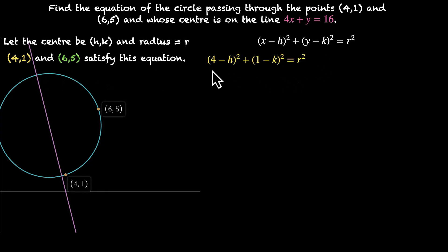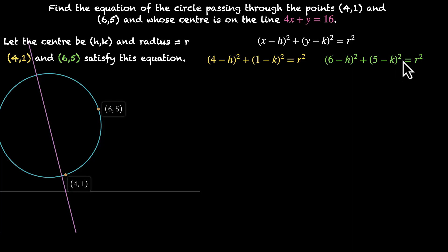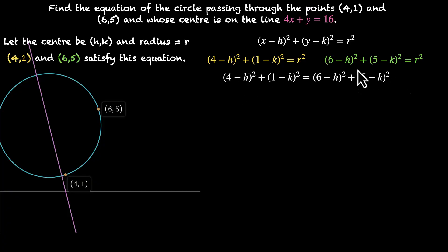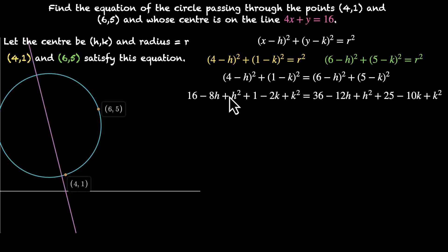Plugging in the two points, we get: 4 minus h squared plus 1 minus k squared equals r squared — that's the first equation. And then when we plug in 6 comma 5, we get 6 minus h squared plus 5 minus k squared equals r squared. Now we can eliminate r squared, since both left-hand sides are equal to r squared. Opening the squares, we get 16 minus 8h plus h squared plus 1 minus 2k plus k squared equals 36 minus 12h plus h squared plus 25 minus 10k plus k squared.